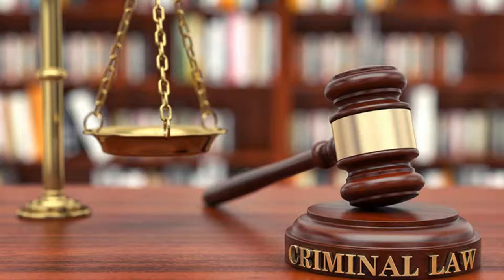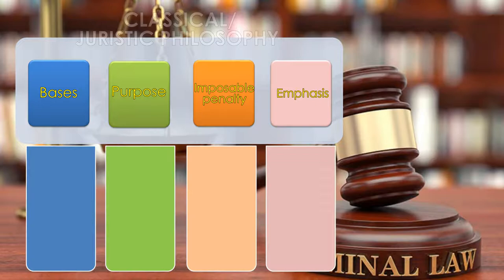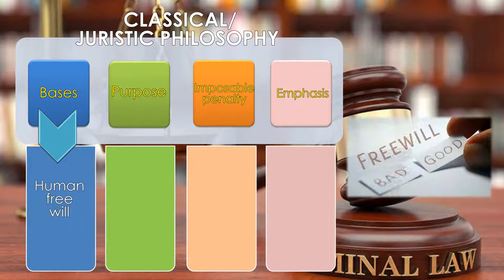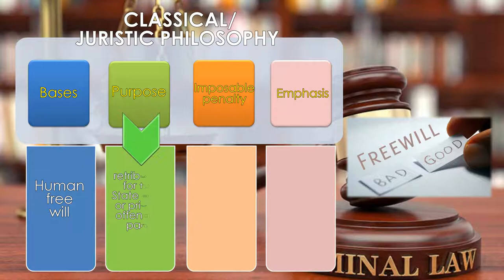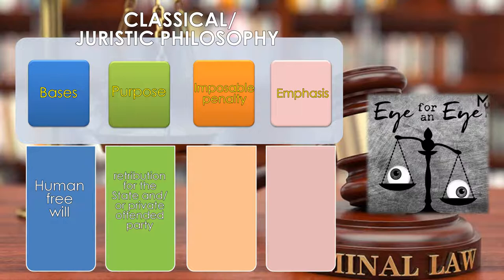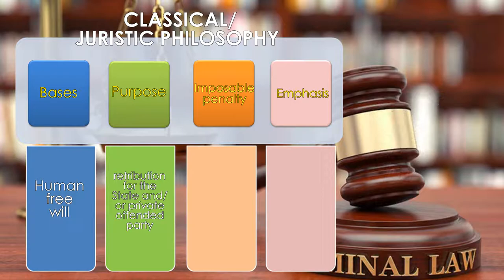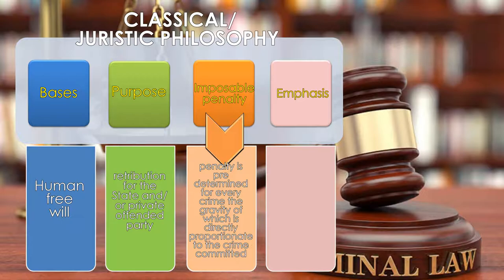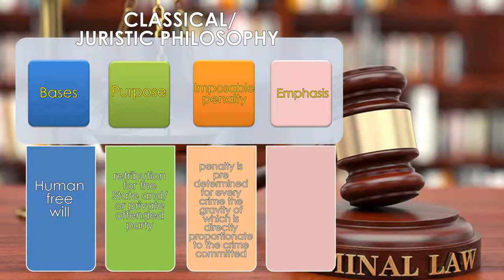Now let us compare the two philosophies. Under the classical philosophy, the basis of criminal liability is human free will. As for the purpose of the penalty, retribution for the state and/or private offended party must be observed. It evolves from the maxim 'an eye for an eye.' Therefore, for every crime committed, there is a corresponding penalty based on the injury inflicted on the victim. The penalty is predetermined for every crime, the gravity of which is directly proportionate to the crime committed. Thus, homicide is punished with reclusion temporal, whereas murder with reclusion perpetua.